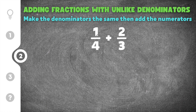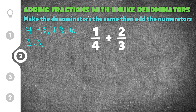Number two gives us one fourth plus two thirds. Again our denominators have to match, so we need to find the least common multiple. Listing multiples of 4: 4, 8, 12, 16, 20. Listing multiples of 3: 3, 6, 9, 12. We can stop at 12 because that's the least common multiple shared by both denominators.